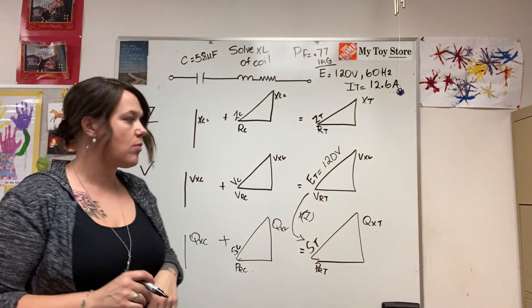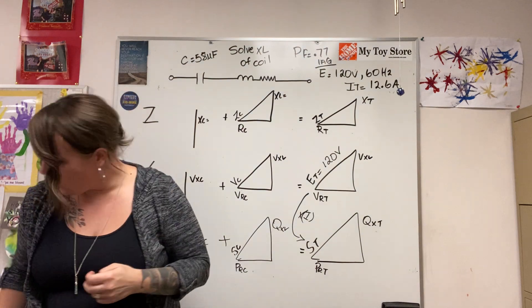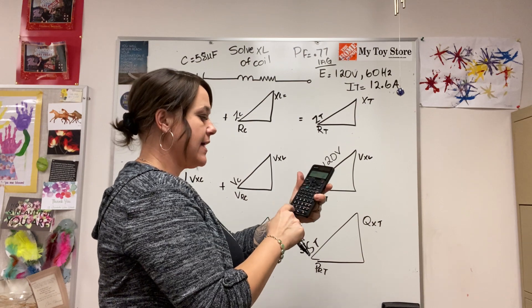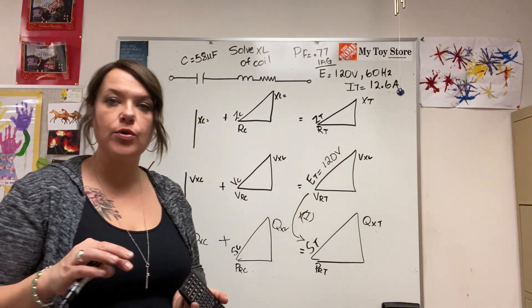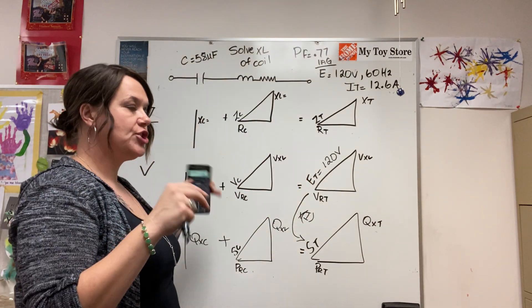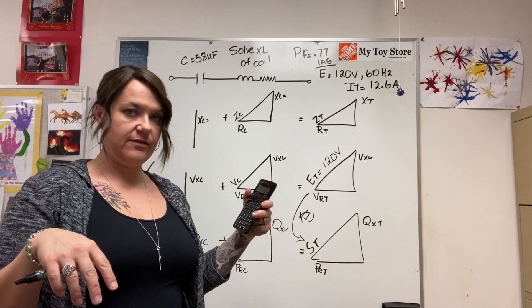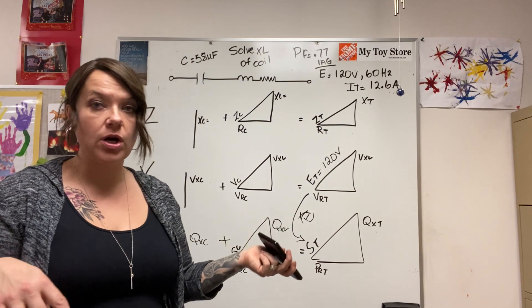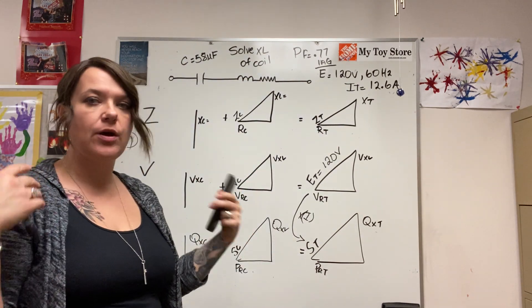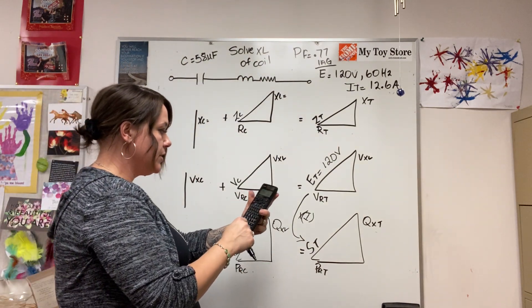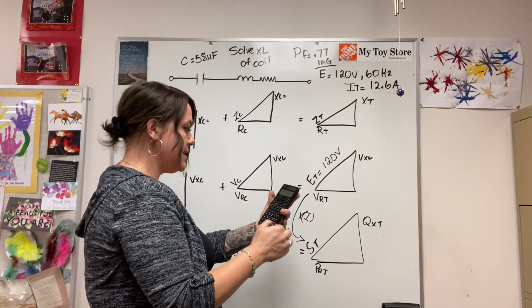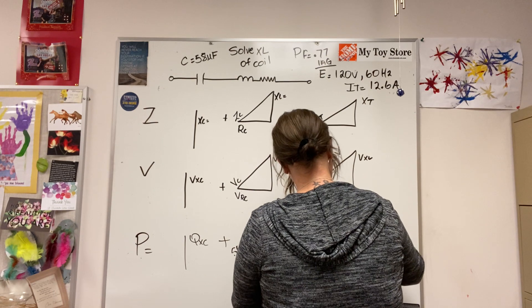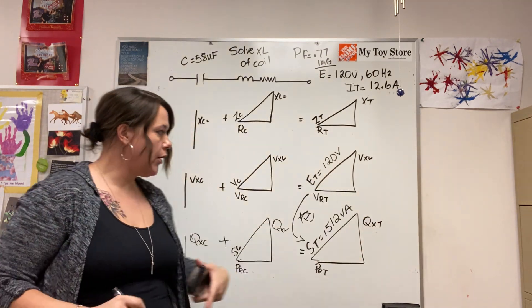It's easy, it's there, why not do it? So if I go 120 volts times 12.6, I can't encourage enough to get a photocopy of that sheet that I shared in Series Resistive, the RL and the RC circuits where I show the relationships - by all means use it. 120 times 12.6 equals 1512 VA.